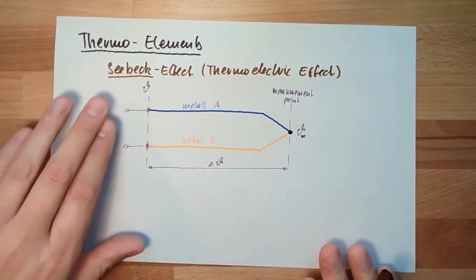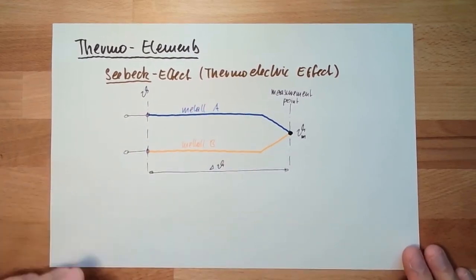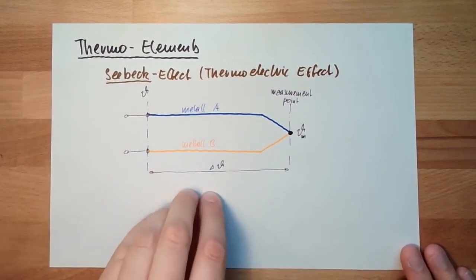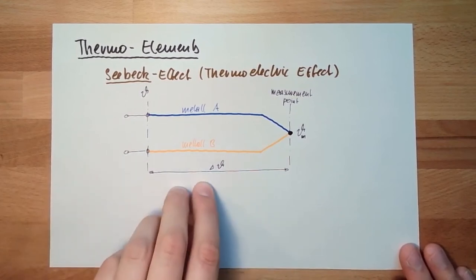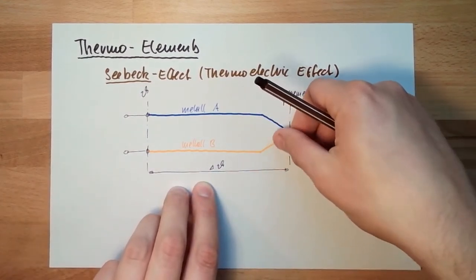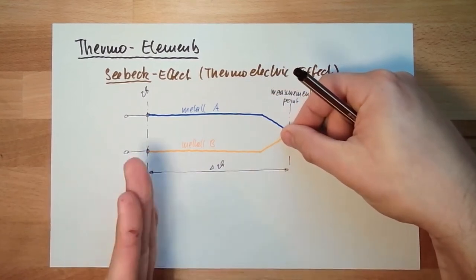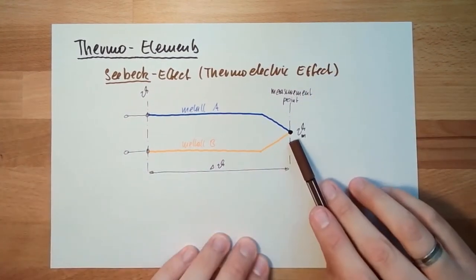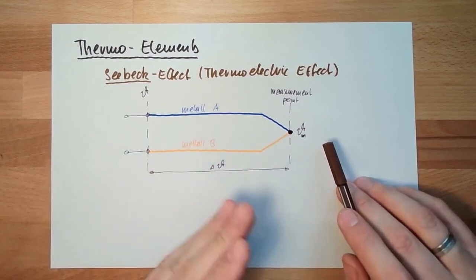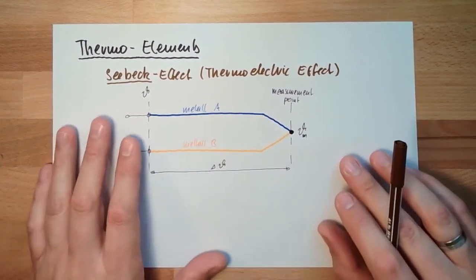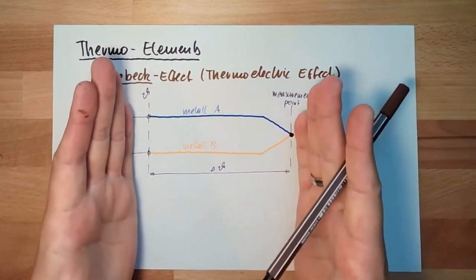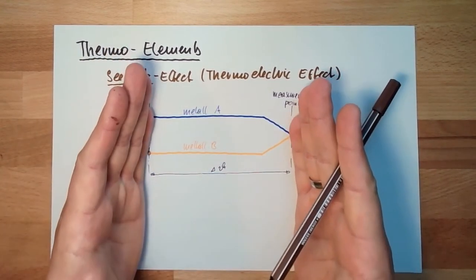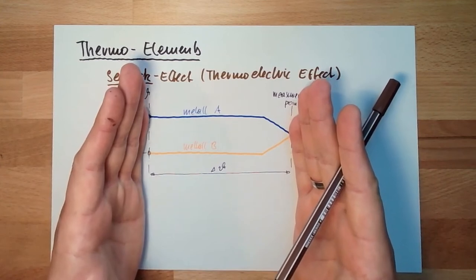Actually, Seebeck himself believed this was a thermo-magnetic effect. He built something up, and there was a compass underneath by accident. Every time he touched these endings, the compass moved a little bit. When he put a candle here and made it hotter, the compass moved further. He realized it was the temperature difference between these points which made the compass move.